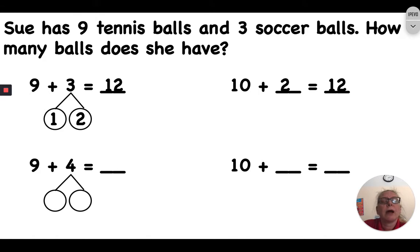Nine and four. I want to break the four apart so that I can make a ten. So let's break it apart. One and three. So what number is left over? If that one is going to go with the nine, I have the three left over. Very good. So that means nine plus four equals thirteen and ten plus three equals thirteen.